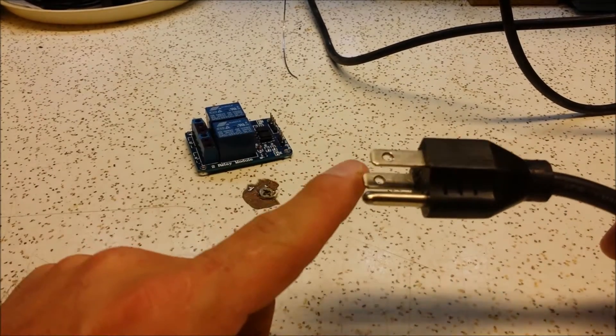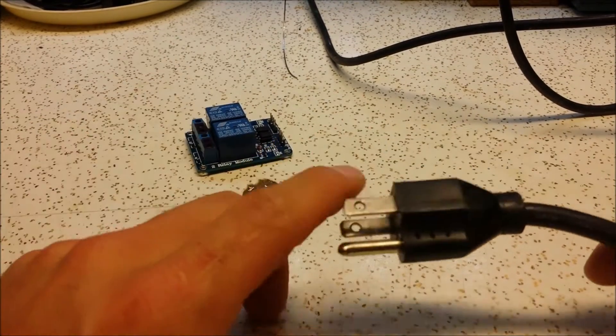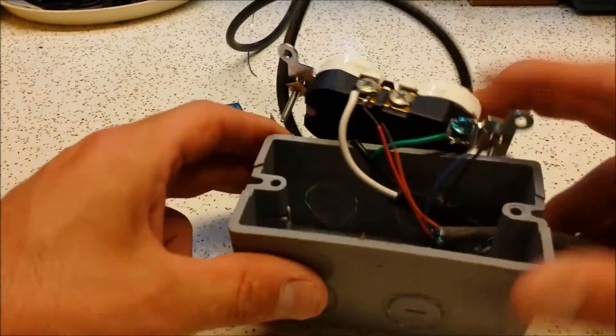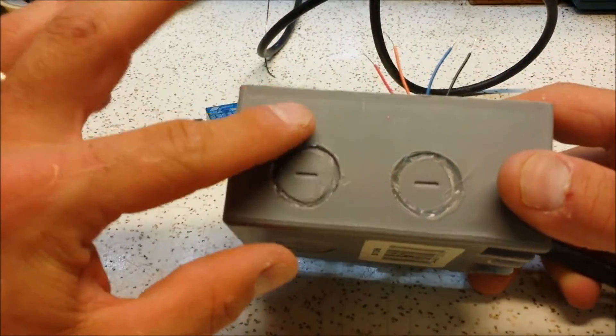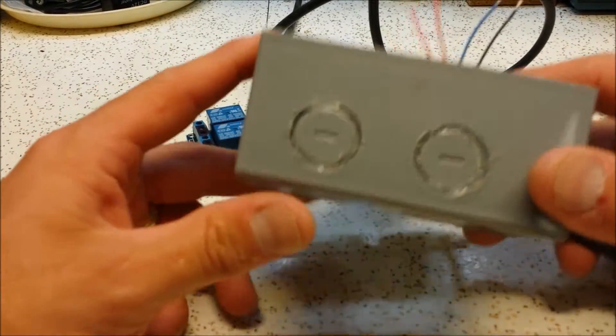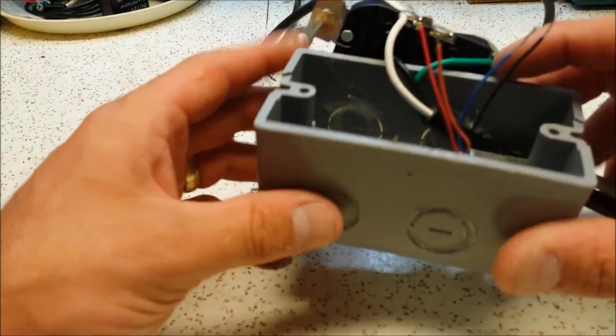Now this is a 120 volt grounded outlet. So that's going to go to this box, what I'm using. This is like a little Jiffy box I got from Lowe's or Home Depot. They're pretty inexpensive, like 50 cents.